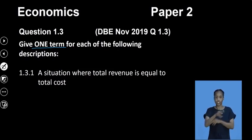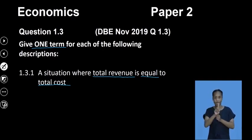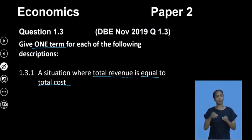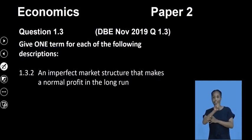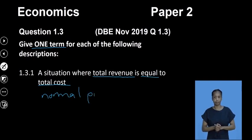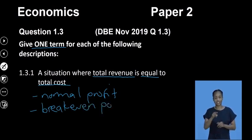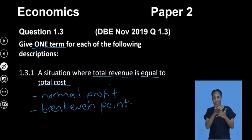Give-a-term question 1.31: a situation whereby our total revenue is equal to our total cost. When our total revenue equals our total cost, what are we experiencing? The answer is normal profit. I would also accept break-even point — it is the point where the business is not making a profit nor a loss. Both normal profit and break-even point are acceptable answers for this question.